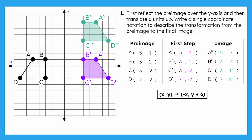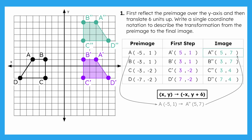How can we confirm that this coordinate notation is correct? We can apply it to one of our coordinates to check. If we take point A, change the sign of the x-coordinate from negative 5 to positive 5, and add 6 to the y-coordinate, we'll get 5 comma 7, which matches the coordinates of point A double prime. This coordinate notation is indeed correct.